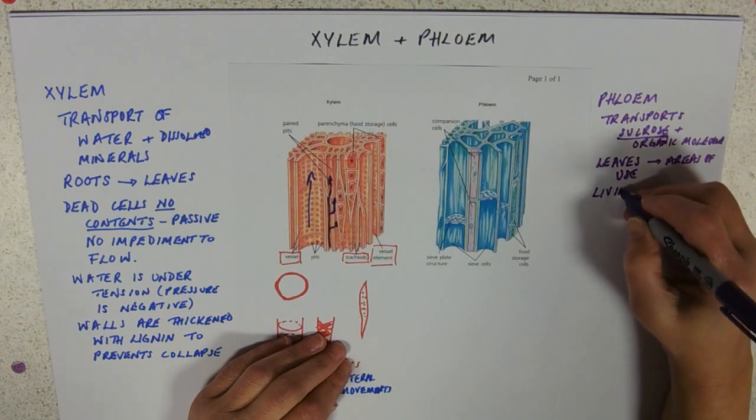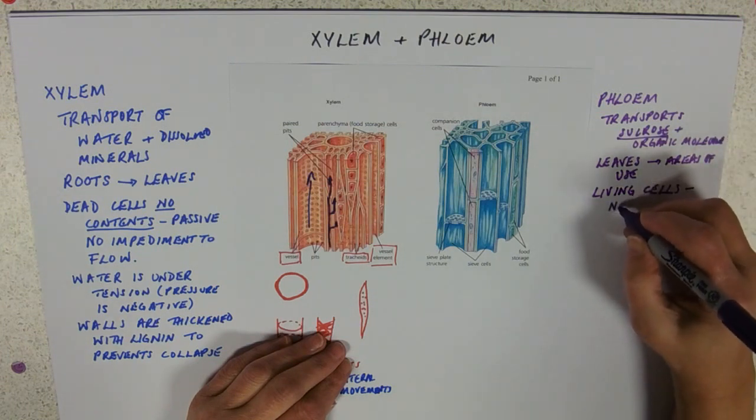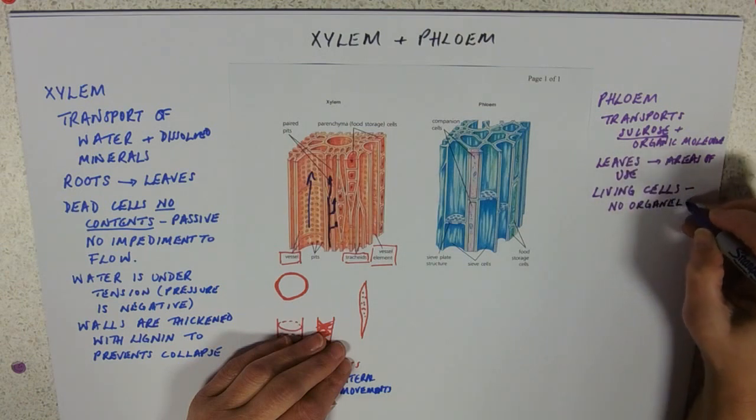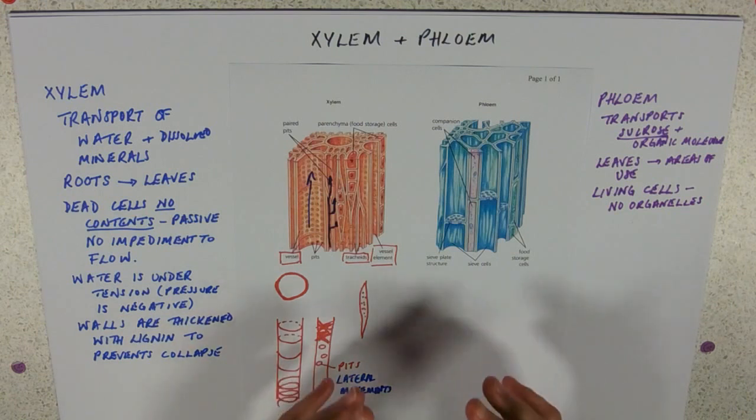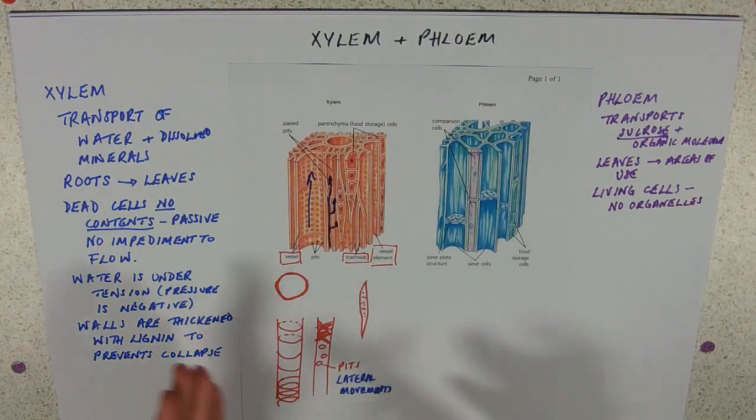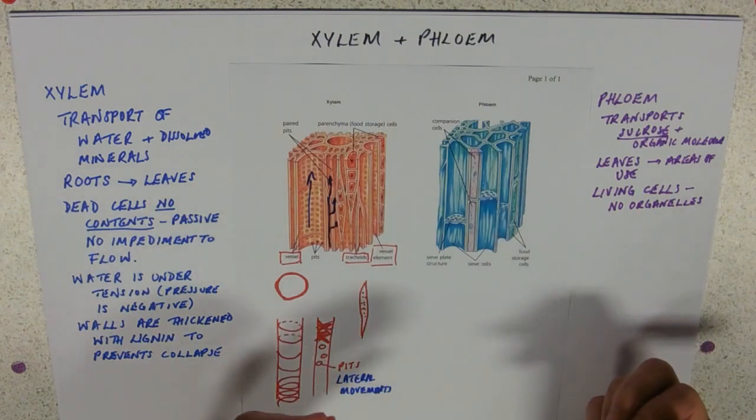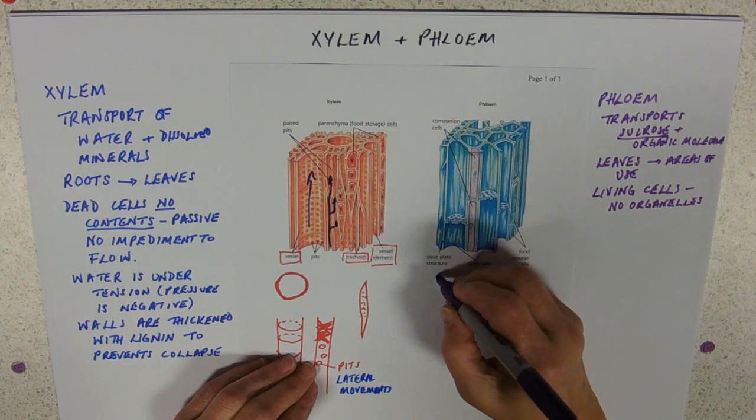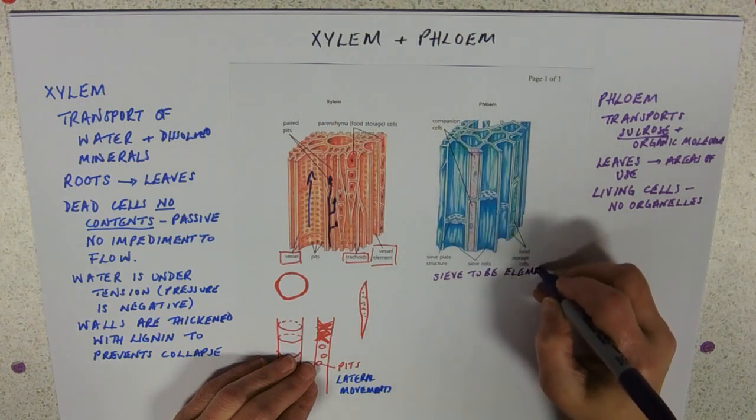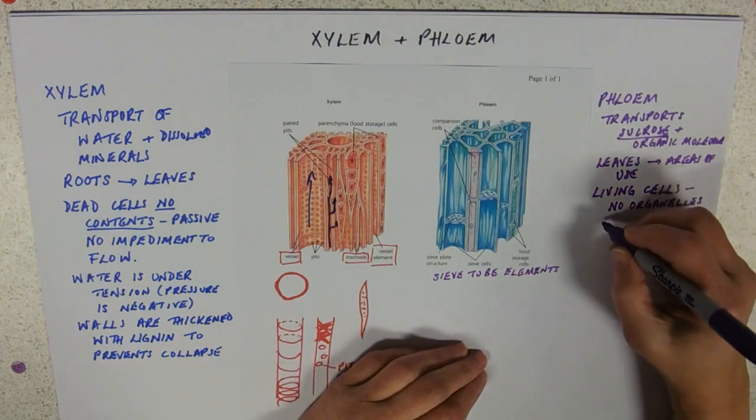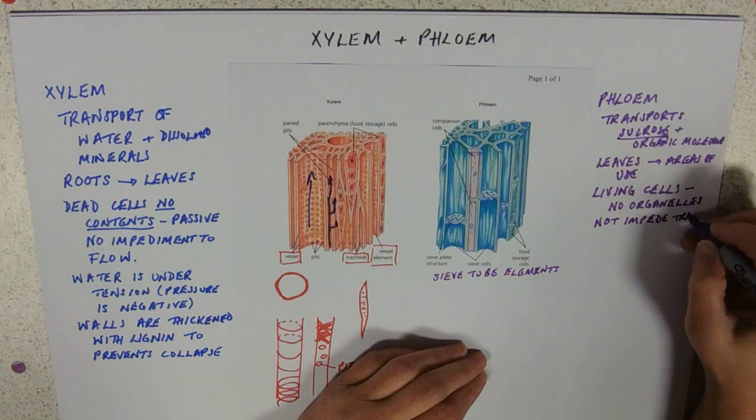So these are living cells. But again, we're using them, plants are using them for bulk transport. So they have no organelles. So they're not impeding the flow by having a load of molecules travelling through and bumping into a bit of endoplasmic reticulum. When we did cell structure, you saw that the cells are absolutely chock-a-block with organelles. Phloem sieve tubes, or sieve tube elements as I like to call them, so these are sieve tubes. No nucleus, so quite similar to a red blood cell. And again, it's to not impede the flow, to not impede transport.